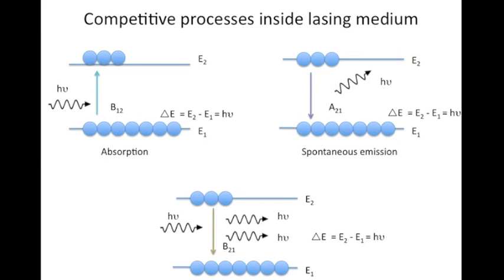Let's assume that there are many atoms inside a cavity, which is our lasing medium. Some of these atoms will be in the ground state and some will be in the excited state. When we shine a photon onto this cavity, if the frequency of this photon matches the resonant frequency of the atom, then this photon might either be used for exciting an atom in the ground state or for stimulated emission from an atom in the excited state. There are finite probabilities associated with these processes.